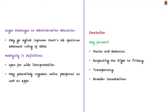Fourthly, ambiguity in definitions — the definitions of 'telecom,' 'telecom services,' and 'message' are so broad that they potentially leave a door open for wide interception. It is alleged that these definitions have been kept wide open to potentially regulate online platforms and apps like WhatsApp and OTT platforms. These concerns can be written in the second part of your answer.